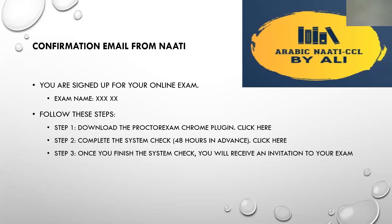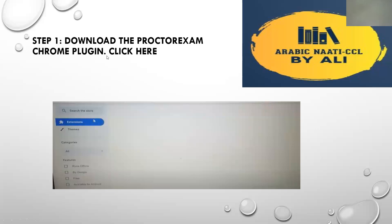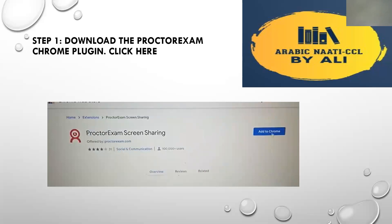The first step is to download the Proctor Exam plugin — there is a phrase 'click here.' Once you click on it, you will be taken to a new screen. On the left-hand side you will see Extensions in blue — just click on it. Another screen pops up on Chrome: the Proctor Exam Screen Sharing page. Go to the right-hand side, click the blue rectangle, and it will be added to Chrome. This is exactly how the screen looks on the exam day.